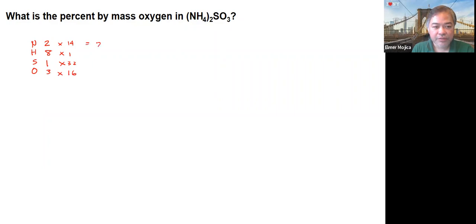So we have that this is 28, this is 8, this is 32, and this is 48. So we add them together. Eight plus eight, so 16, 24, 26, carry two, so that will give you 116.